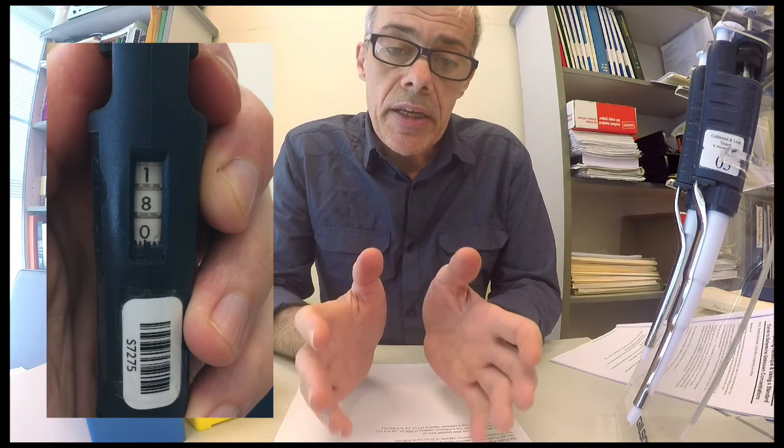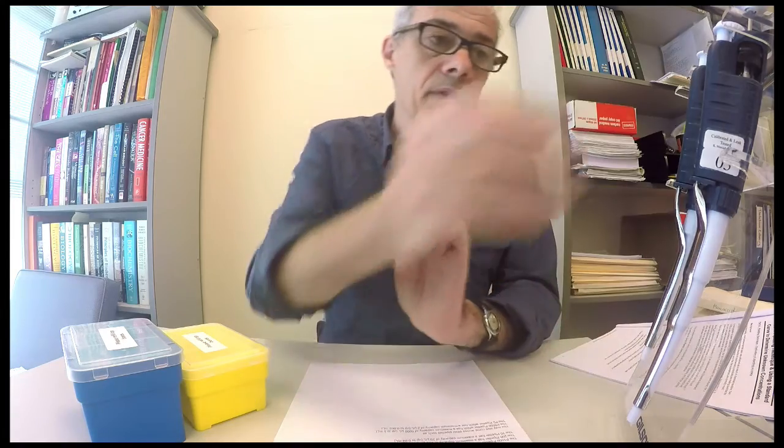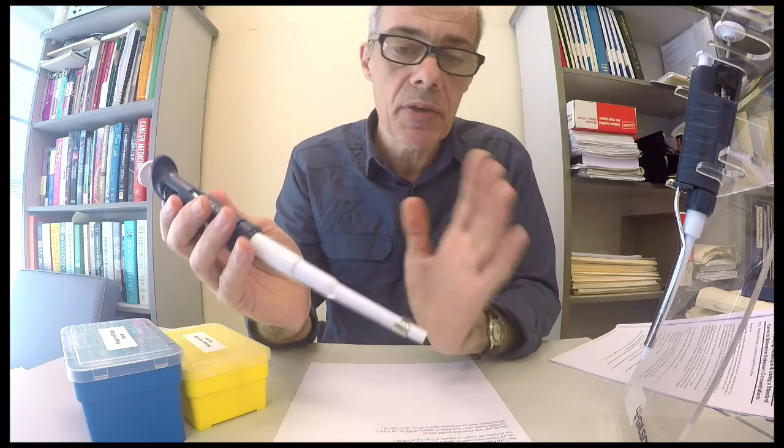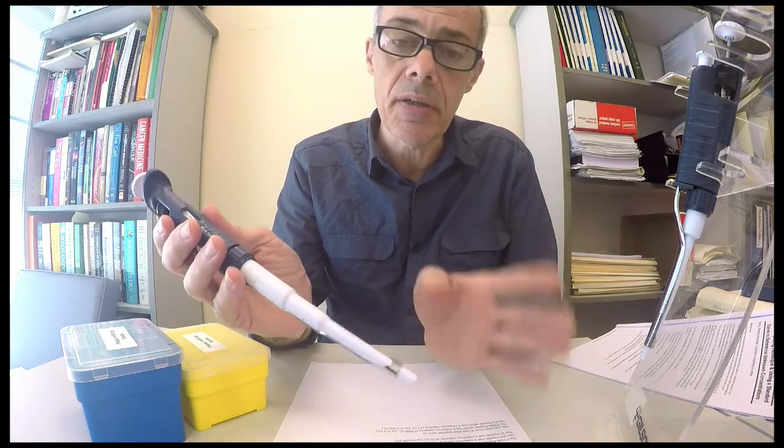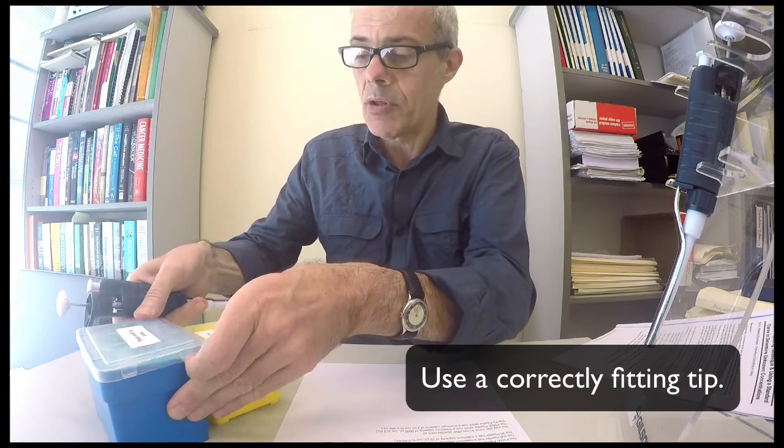The next thing you need to be clear on when using pipettes is putting the right tip onto the bottom of the pipette. So this is a pipette but it doesn't have a tip on the end, so it can't be used until it's fitted with its tip. So here is a box of tips.